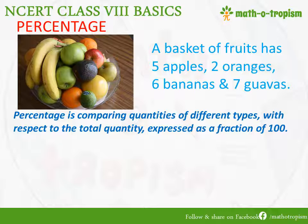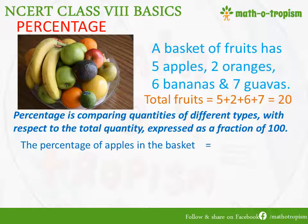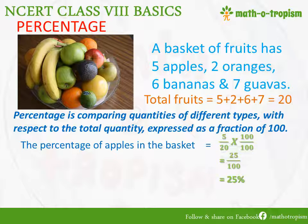So we need to find the total first. In this basket, the total number of fruits is 5 plus 2 plus 6 plus 7, which comes to 20. When talking about the percentage of apples, the number of apples is 5 and the total is 20, so it is 5 out of 20. We write the fraction as 5 by 20, and since percentage is expressed as a fraction of 100, we multiply by 100 over 100, giving us 25 by 100, which is expressed as 25 percent.